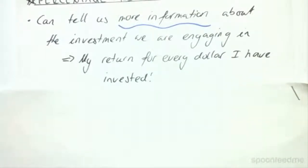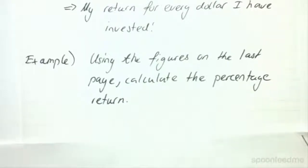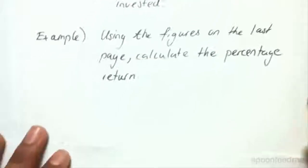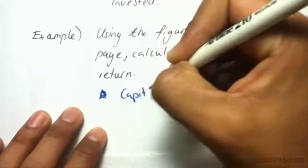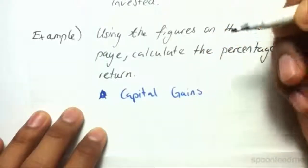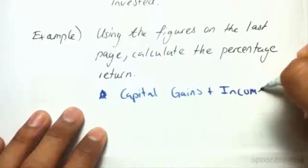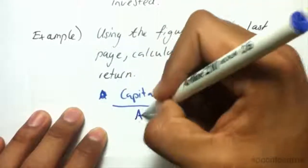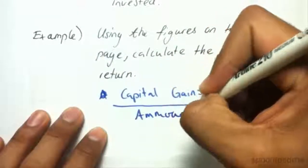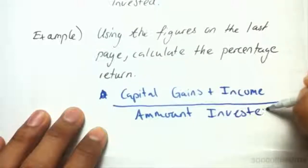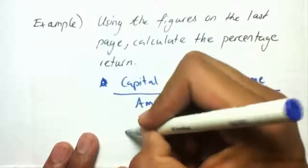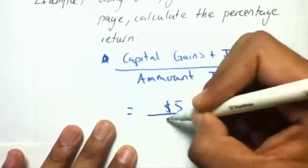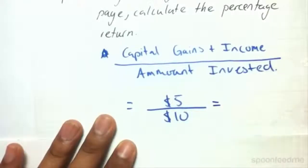That's a very good thing that we can keep in mind, and the percentage return does just this. Using our figures from before, if we want to calculate the percentage return, what we do is put the capital gains and income over the amount invested. So it's basically our return over the amount invested. We know our return was $5 and we initially invested $10, and so our percentage return...